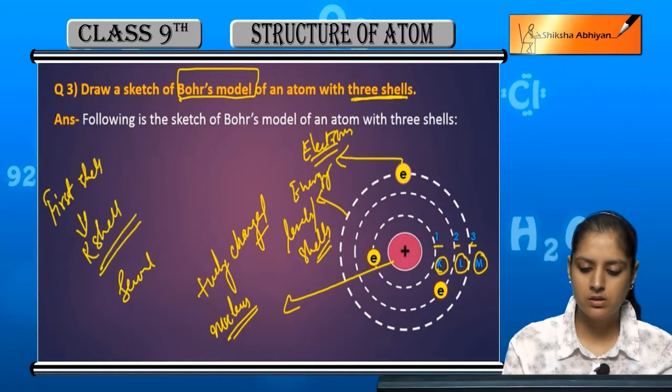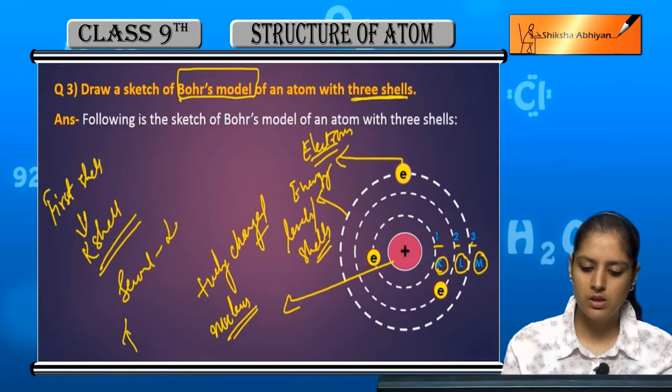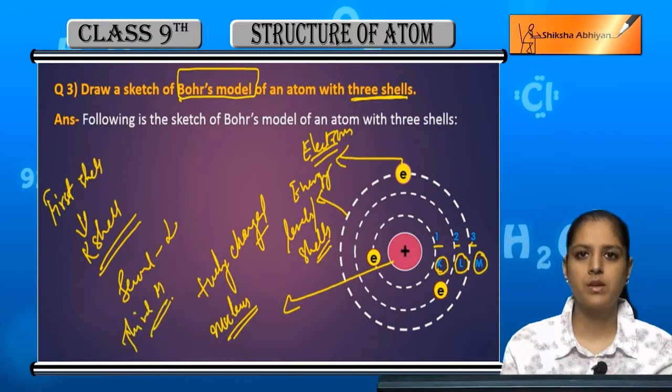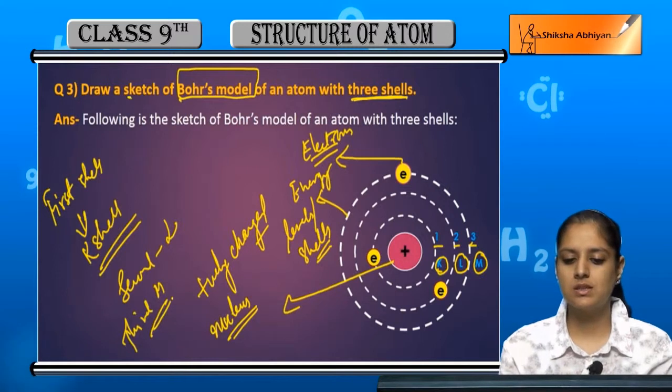Jo second hota hai usko L bolte hai aur third ko M, fine. So this is the sketch of Bohr's model and with three shells.